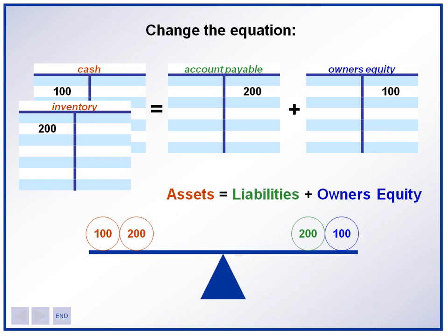Again, remember that our basic accounting equation is assets equals liabilities plus owner's equity. Assets will increase with a debit, and liabilities and owner's equity increase with a credit, or they have a normal credit balance. Thank you. My name is Chris from the University of Wyoming Delta Alpha Chapter of Beta Alpha Psi.